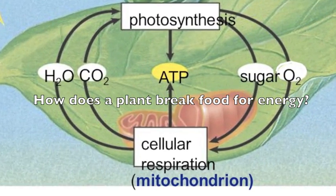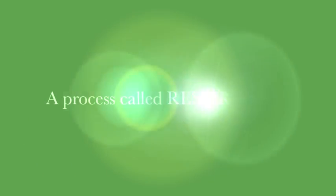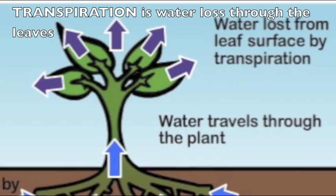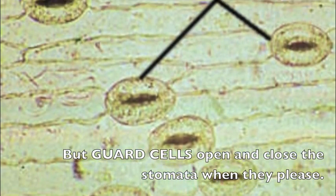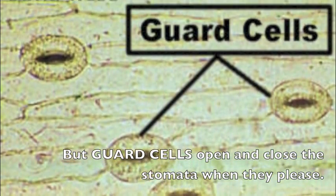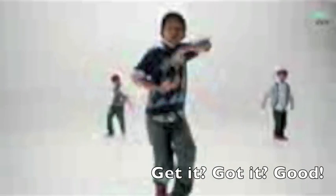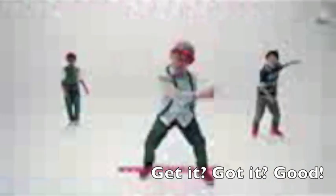How does the plant break down food for energy? A process called respiration, baby. Transpiration is water lost through the leaves, but stomata open and close whenever they please. Get it, got it good.